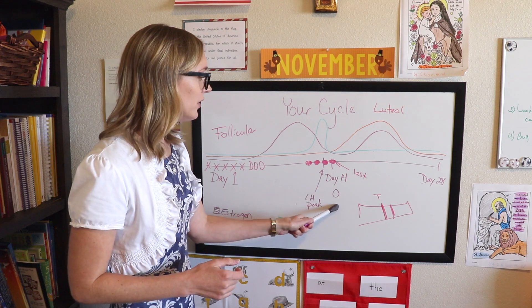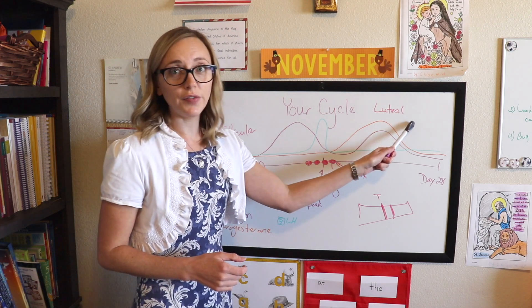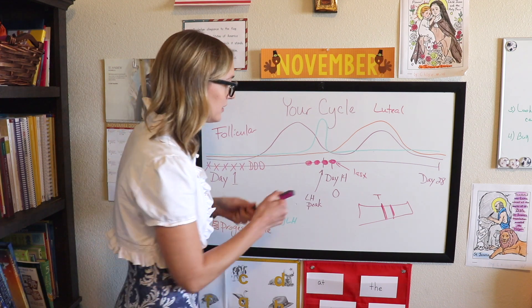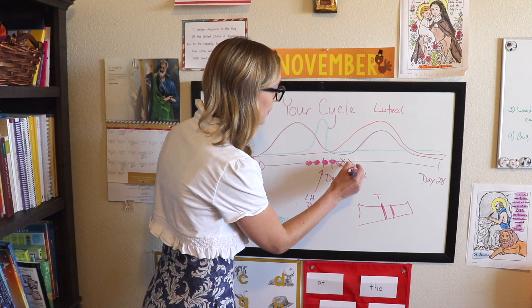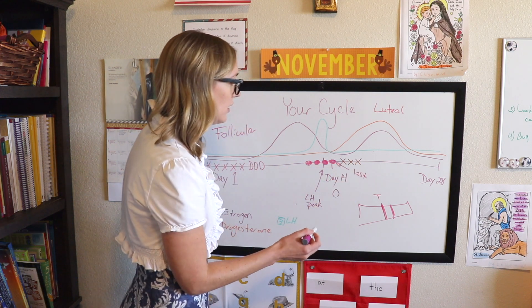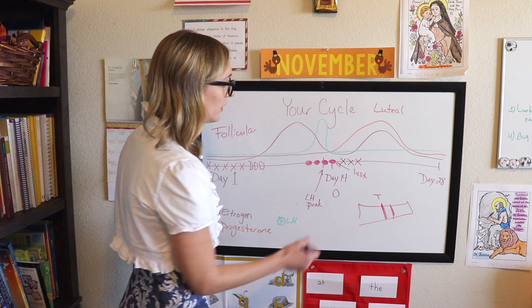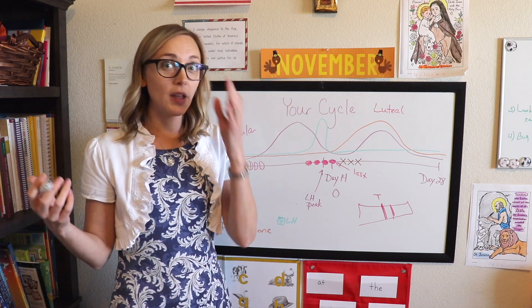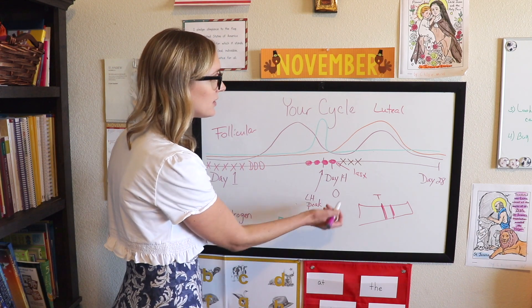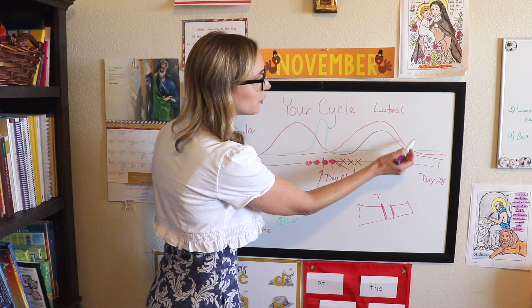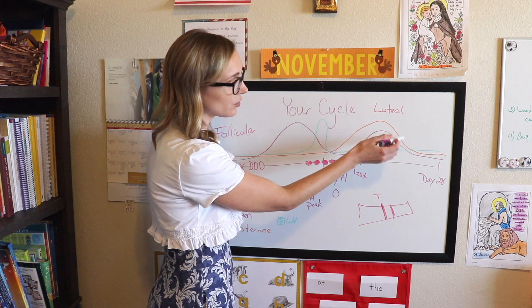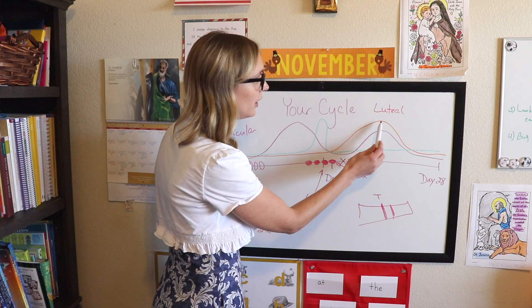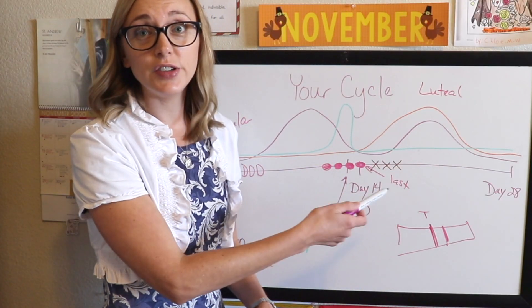So then once ovulation occurs, you're in the luteal phase of your cycle. And like I said, you can track it based on cervical fluid because this will start to dry up again once you've ovulated. Because your body's done what it needed to do to get the sperm to the egg. Now, if you are pregnant, these drops won't occur. And your temperature will also stay up high if you're temping.